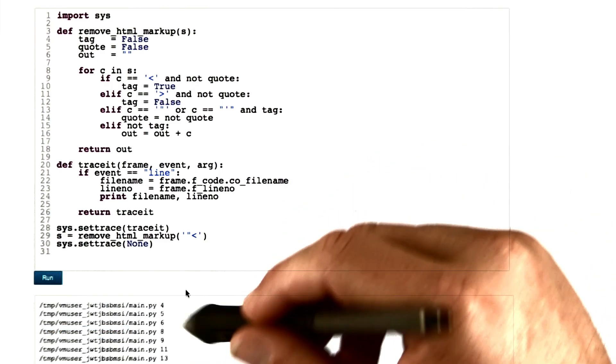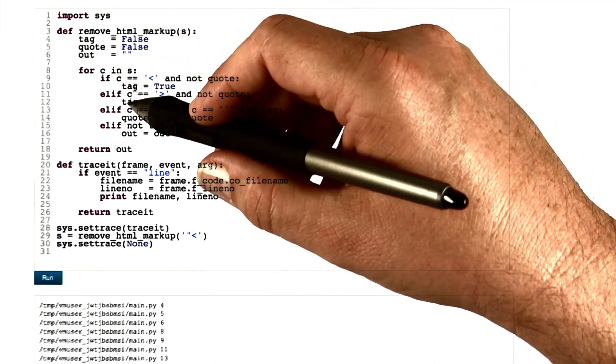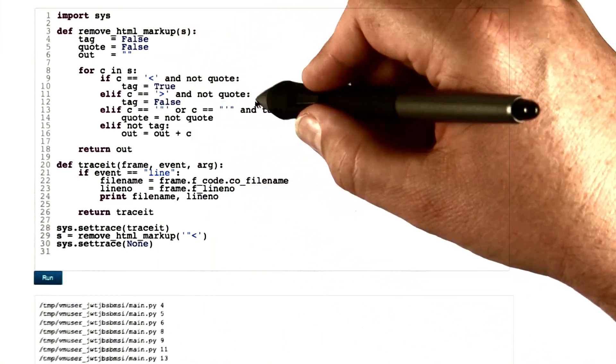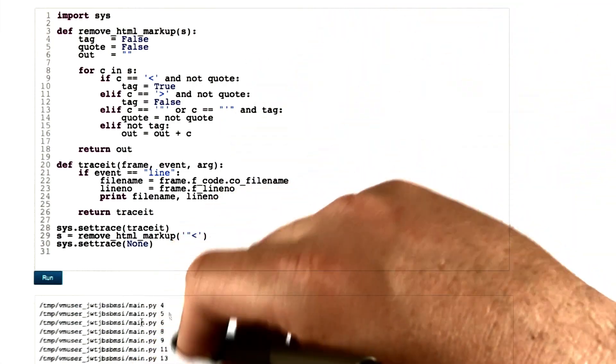And we click on run. And what we see here is that first line 4 was executed, then line 5, then line 6, then line 9, then line 11, line 13, line 14. And this is how we progress through the program execution.